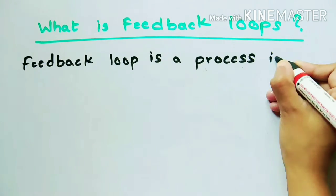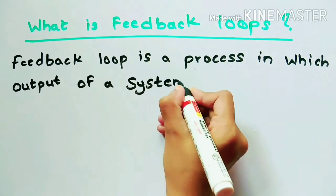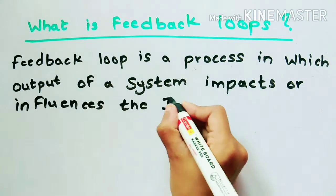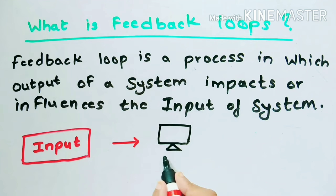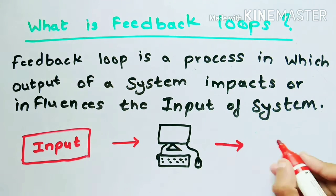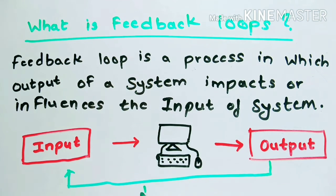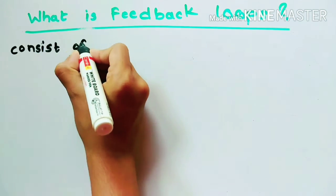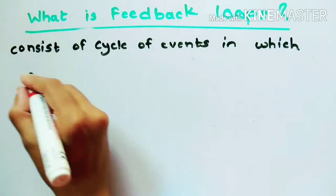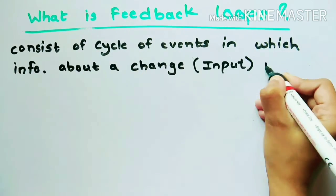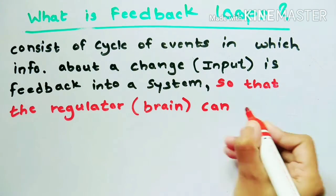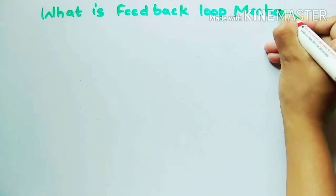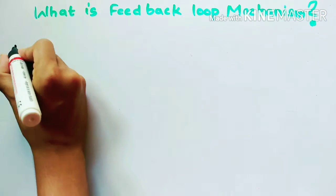Now, what is a feedback loop? A feedback loop is a process in which the output of a system impacts or influences the input or the stimulus. You have input, that input is processed by the regulator — that is the brain — and then we have output, and that output impacts the input. So it consists of a cycle of events in which information about a change is fed back into a system.